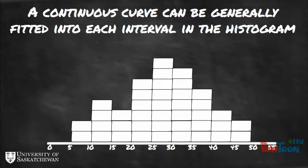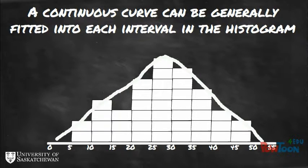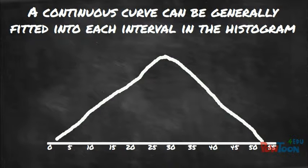We can fit a continuous curve to the high points in each frequency. This curve has particular mathematical properties and is called a bell-shaped curve, a normal distribution, or a Gaussian distribution.